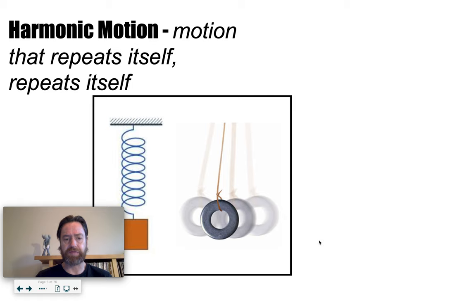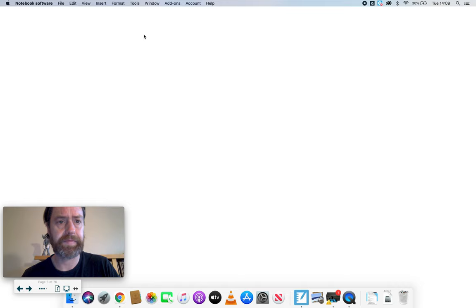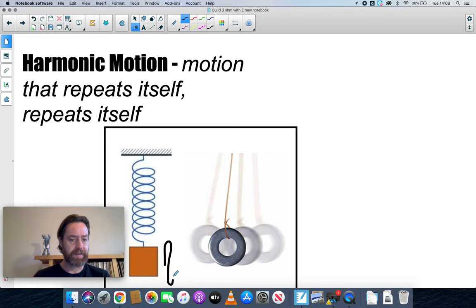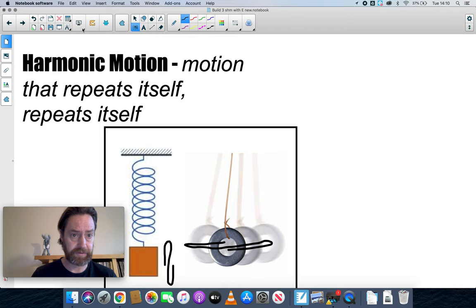In that assignment I tried to draw your attention to a couple of things. The first was the time period for an oscillation. For a mass on a spring, that's for it to go up, back down, and back to the rest position again. Or for a pendulum swinging back and forth, it's one complete cycle. It turned out that the time period was independent of the amplitude of the oscillation.